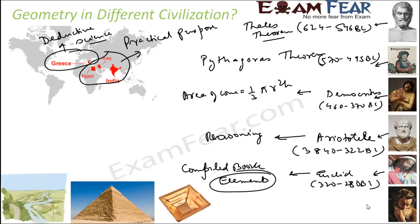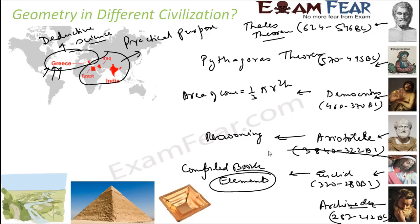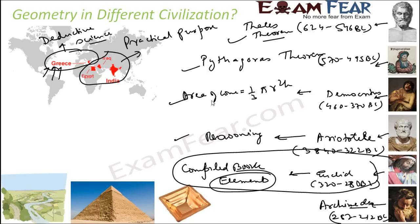Archimedes, another great Greek mathematician around 212 BC, gave the principle of buoyancy. What I am trying to highlight is that it was the Greek civilization which gave birth to deductive geometry — it made geometry a deductive science. Prior to Euclid, there were great mathematicians like Thales, Pythagoras, Democritus, and Aristotle, all of whom helped in evolving geometry. Euclid compiled everything into a book called Elements. This chapter is all about Euclidean geometry and how Euclid contributed to it.